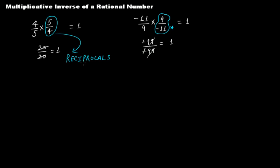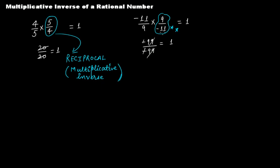Reciprocals are the multiplicative inverse of a rational number. So 5 over 4 is the reciprocal, or multiplicative inverse, of 4 over 5, and 9 over minus 11 is the reciprocal or multiplicative inverse of minus 11 over 9. When we multiply 5 over 4 with 4 over 5 you get 1, and if you multiply minus 11 over 9 with its reciprocal you get 1.